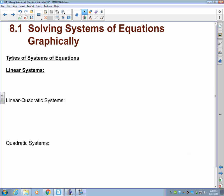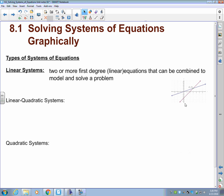This is from last year. We have three different types of systems of equations. Linear systems is what we learned last year. There's two or more first-degree or linear equations that can be combined to model and solve a problem. So there's an example of that right there. You might want to make a sketch of that when you write your definition down.